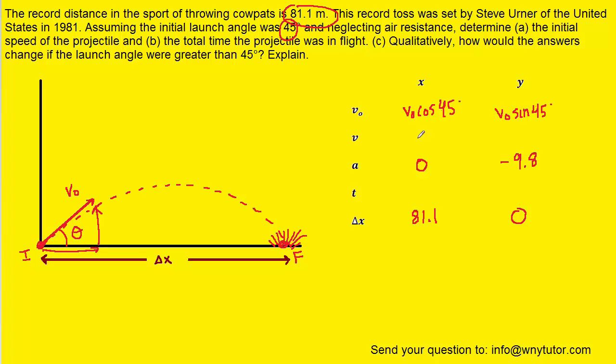For the final velocities in the x direction, because there is no acceleration, the velocity isn't changing. If it started as V0 cos 45, it's going to finish as V0 cos 45.